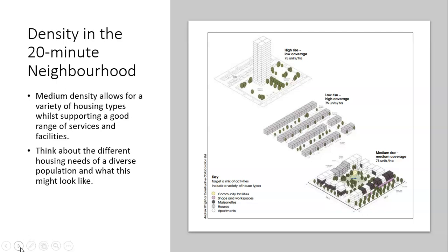The 20-minute neighborhood principle also talks about density. This handy diagram from the TCPA guide on the 20-minute neighborhood shows the difference between high, low, and medium density. We're really looking at working around that medium density idea — medium density gets away from the very high and stressful environment of very high-rise, but it supports a good range of services and facilities. When thinking about your neighborhood design, consider the different types of housing needs a diverse population might have. We need a variety of different housing types, and you should think about how to bring together that variety with the design principle of medium density.